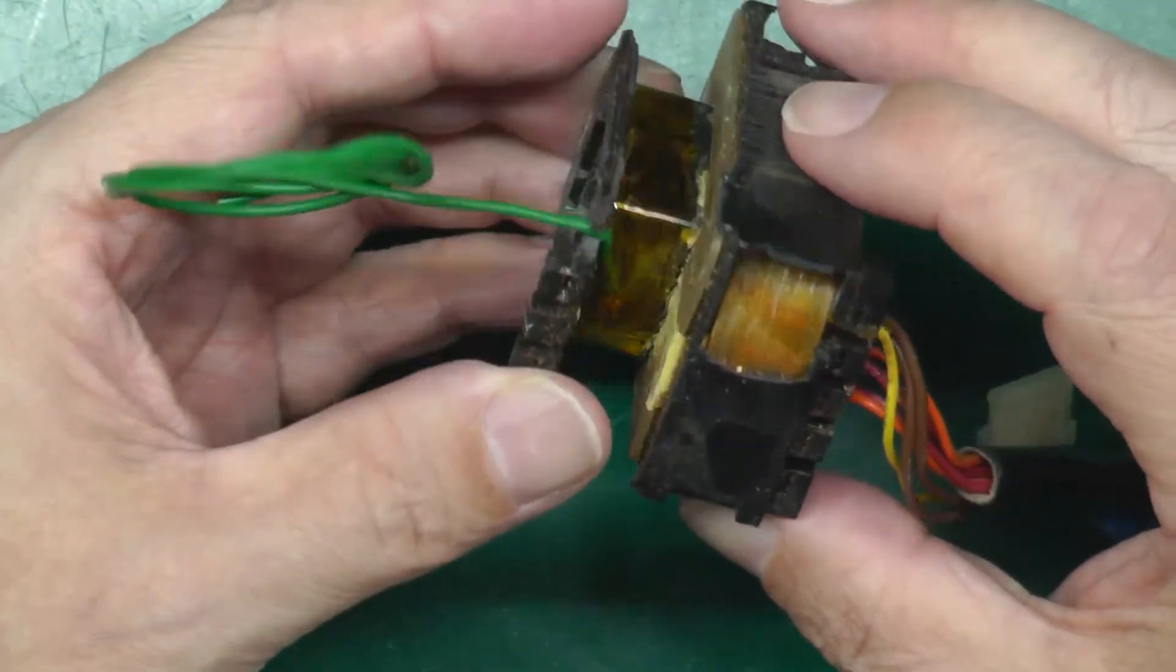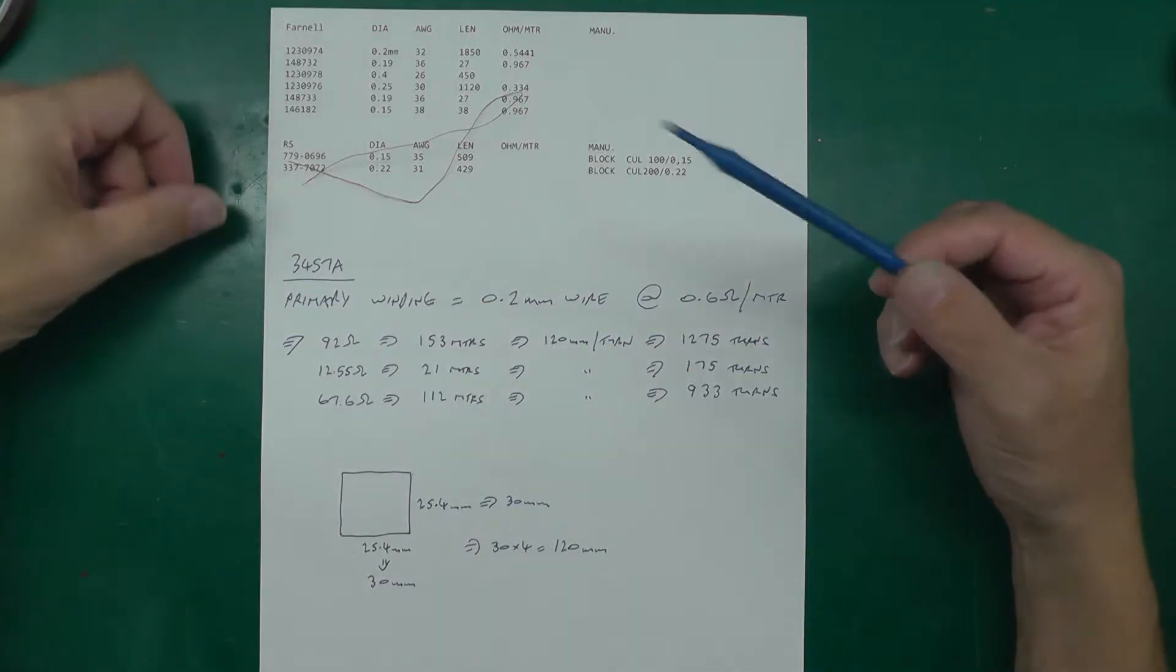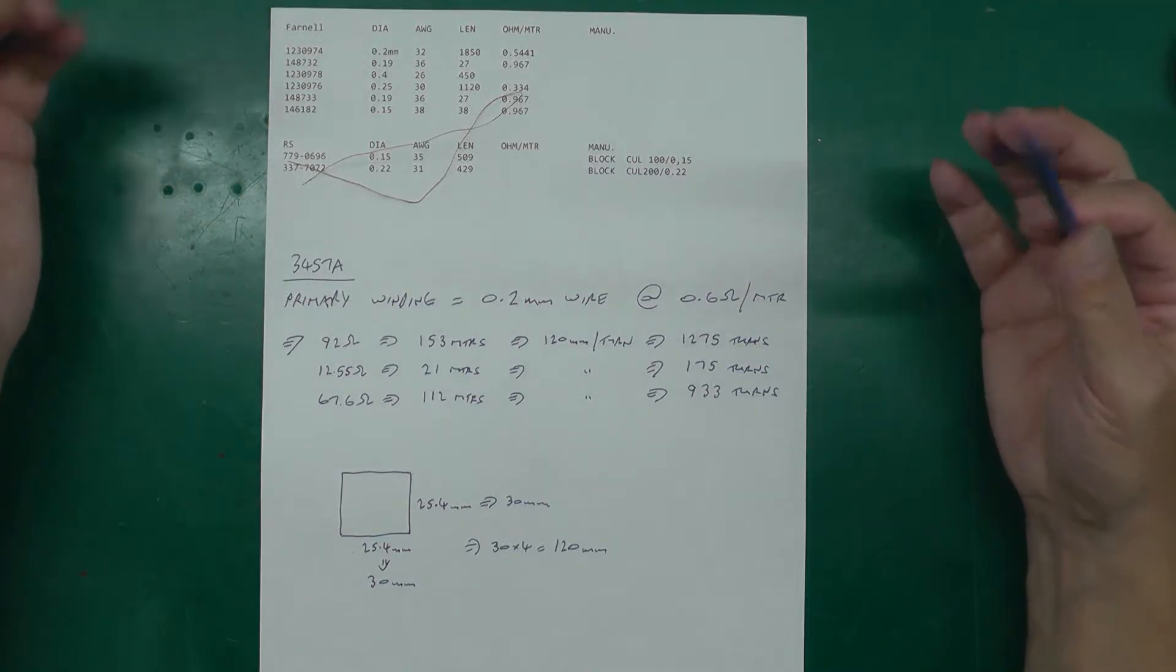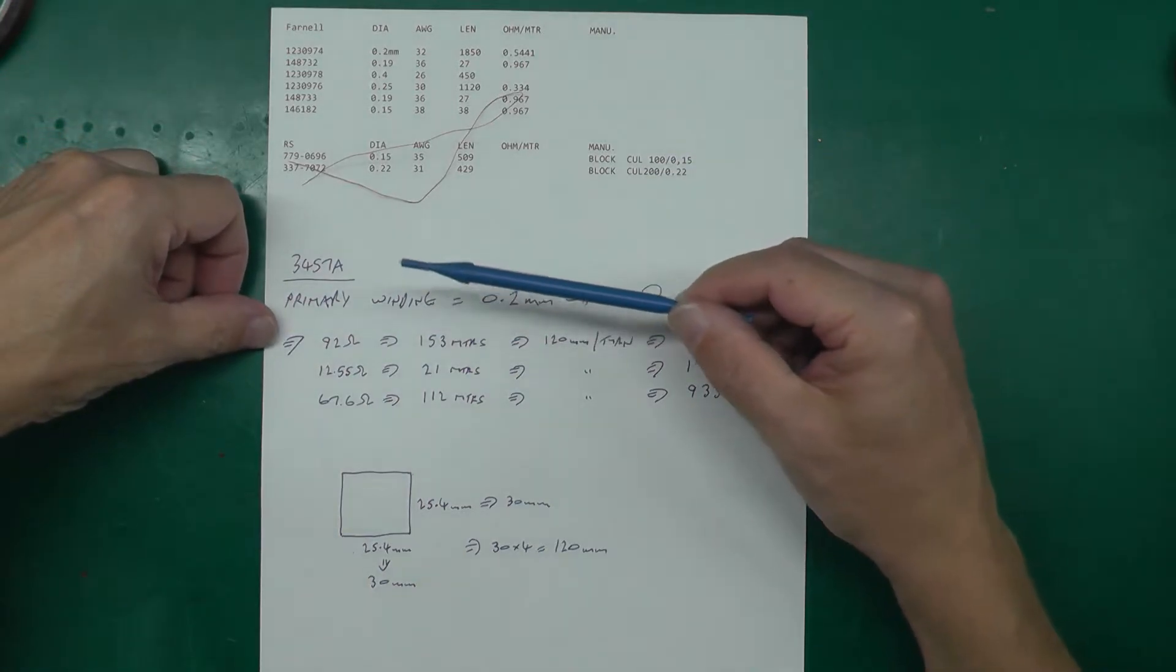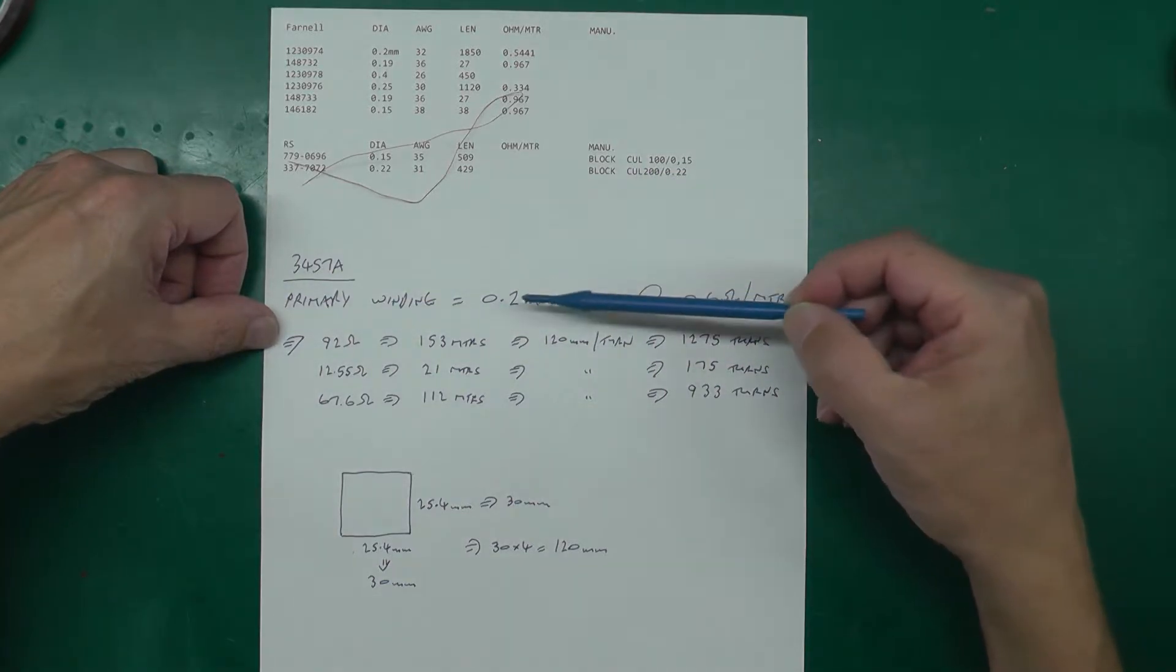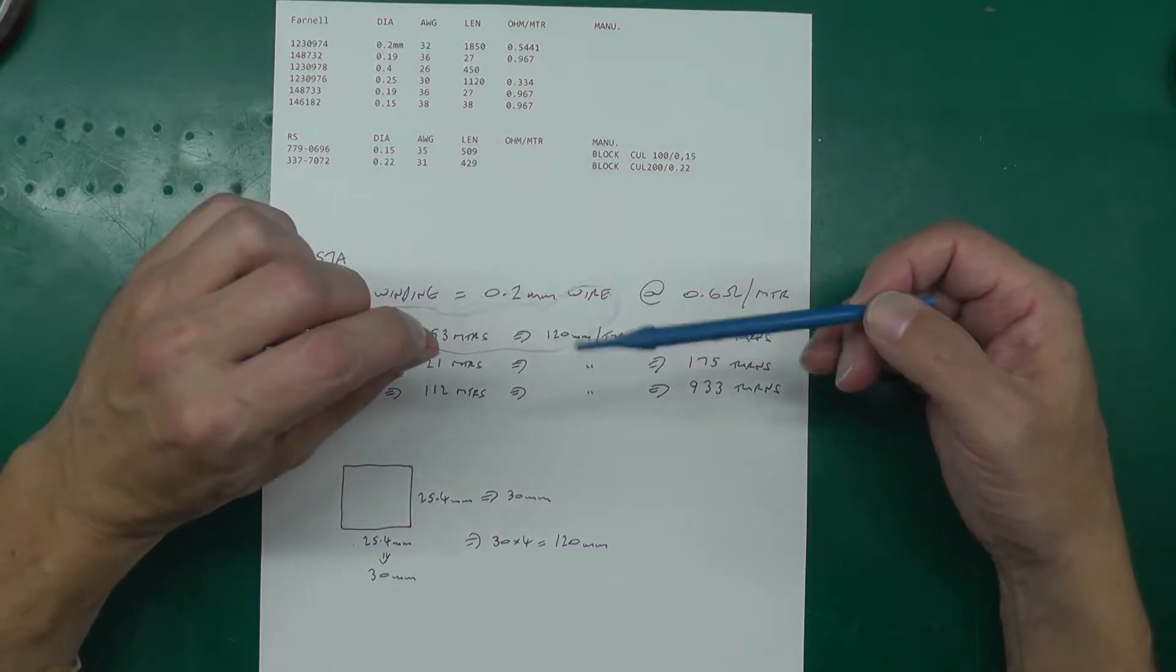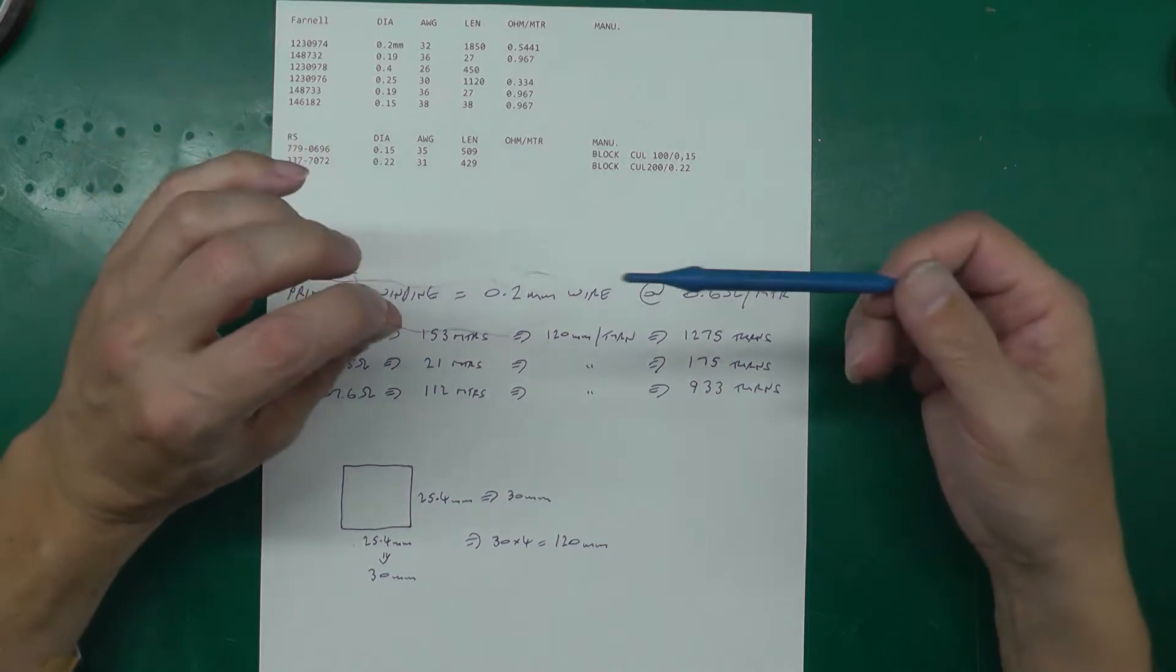Okay, but before we start winding the primary winding on the bobbin I need to know how many turns of that bobbin am I going to do. So the original primary winding on that 3457A bobbin used 0.2 millimeter wire. How do I know that? Well this is a bit of the wire here. I actually went ahead and measured it with the calipers and it's spot-on 0.2 millimeter in diameter. So I've bought a roll of that so we're good to go there.